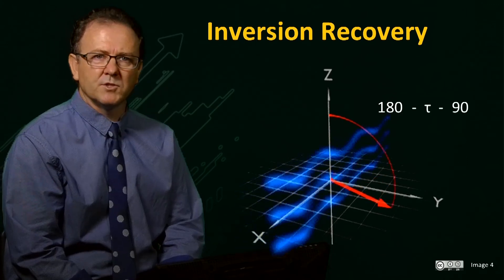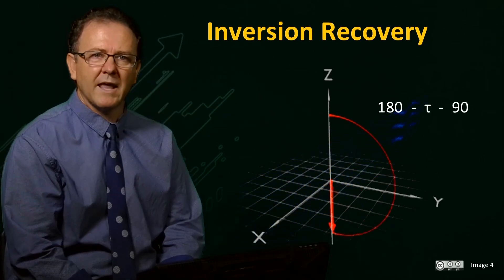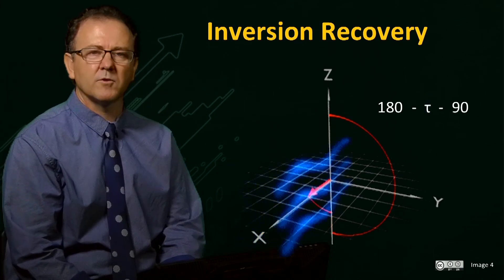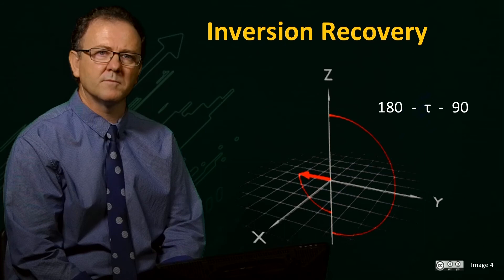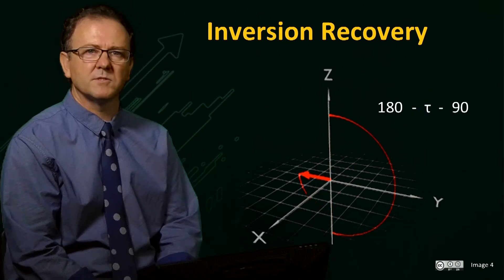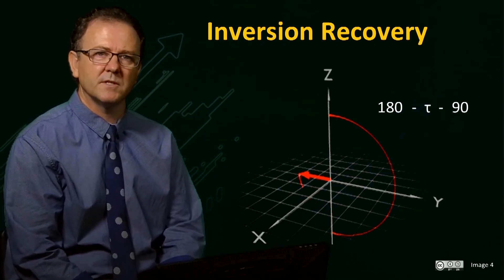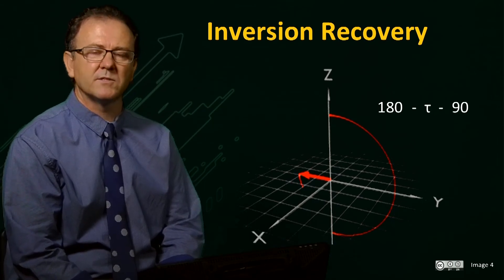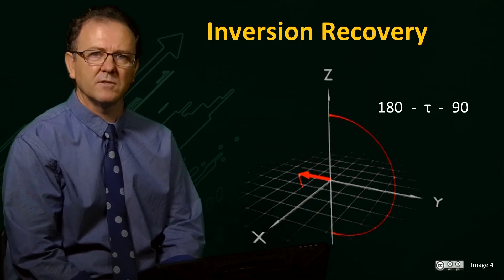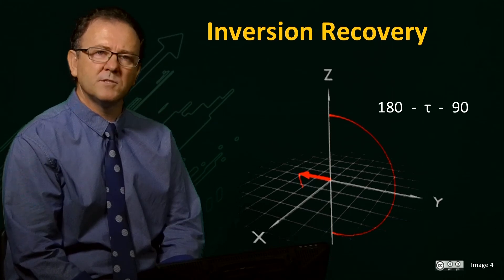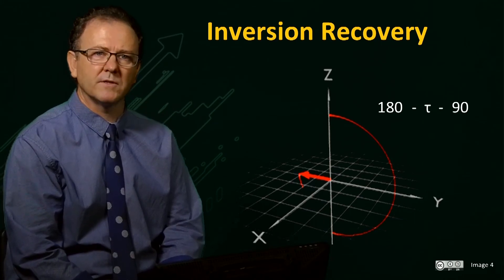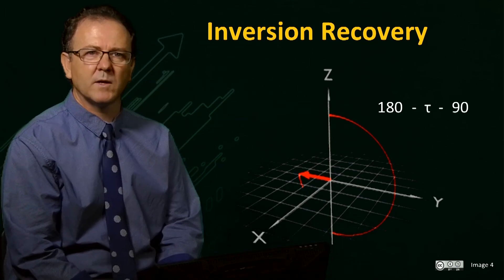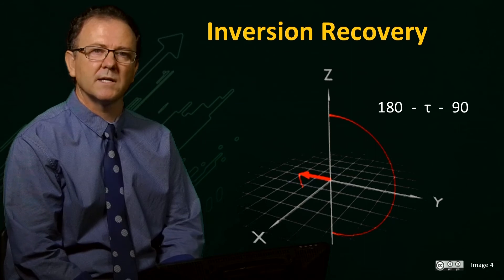After such an inversion pulse, the magnetization will relax along the minus Z axis, through zero and then along the plus Z axis to its original value M0. If a 90 degree pulse is applied at any point during this process, the amount of Z magnetization present will be rotated into the transverse plane and a signal observed. This provides us with a method for measuring the relaxation time T1, as well as further enhancing T1 contrast between different tissue types as we will see later.